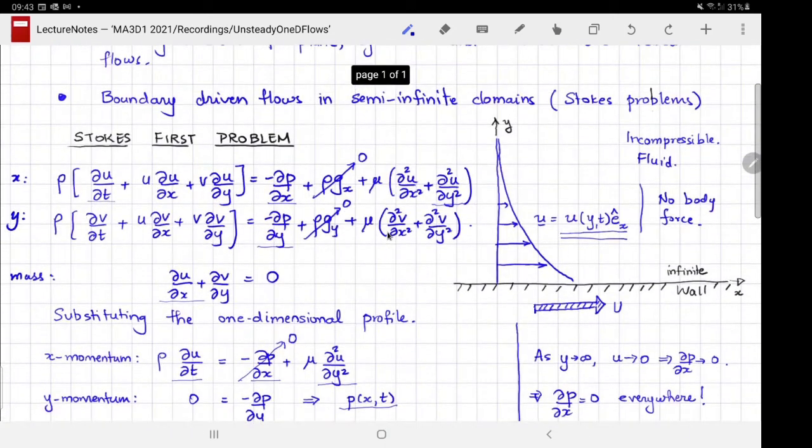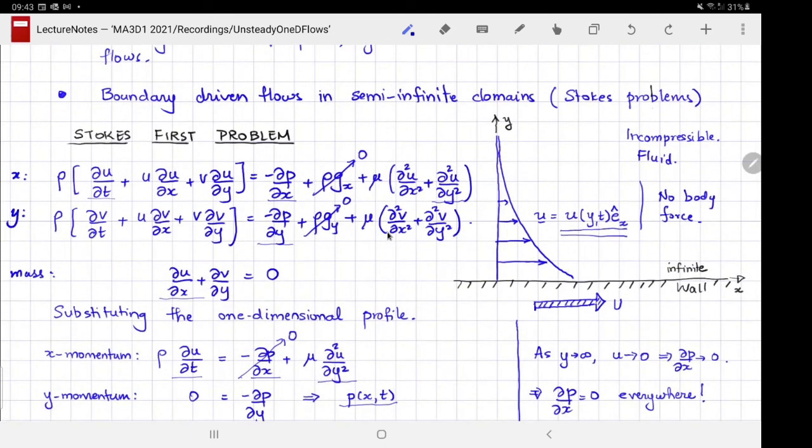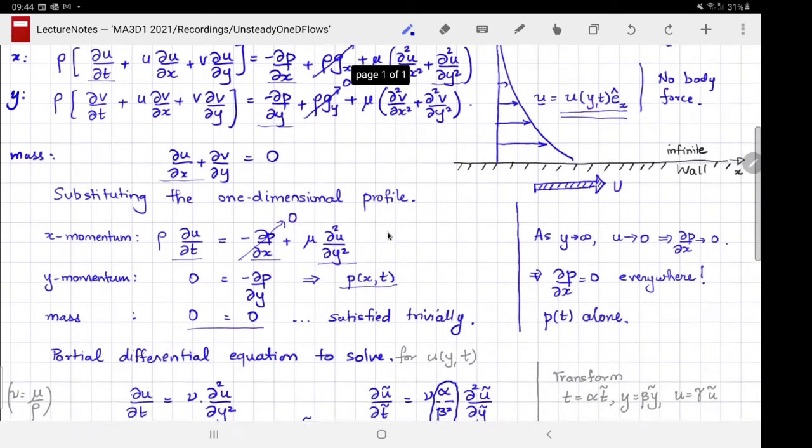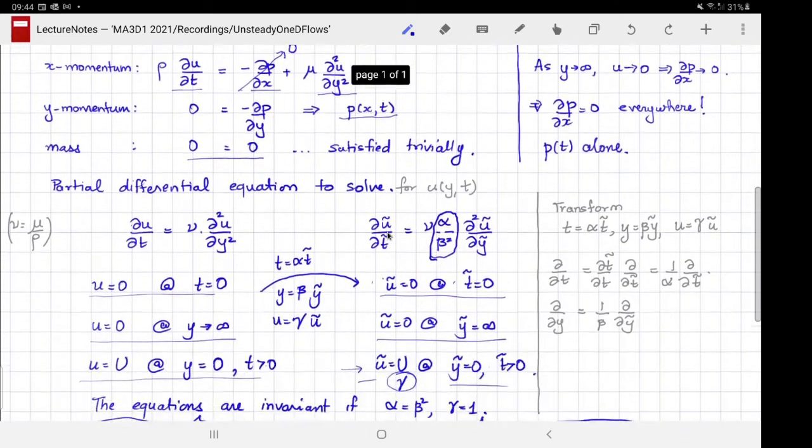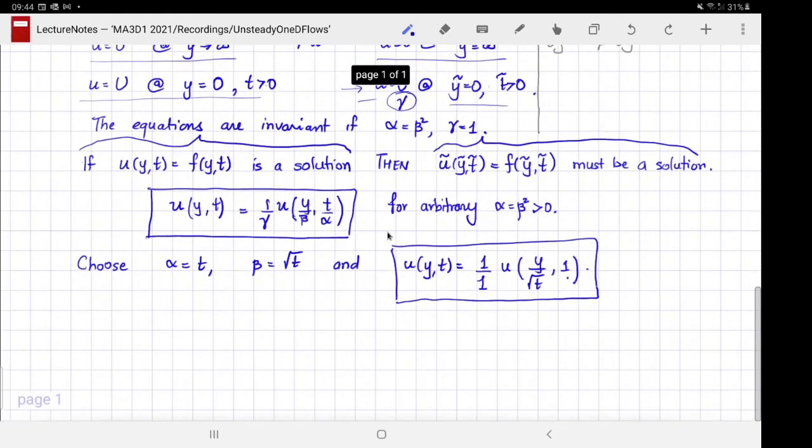To show this graphically, if this is the velocity profile at t equals one, then you can obtain the velocity profile at any other time by simply rescaling this profile in y. That's fantastic—we don't have to solve a partial differential equation. This is really not a function of two independent variables; it's only a function of one independent variable, y over square root of t.